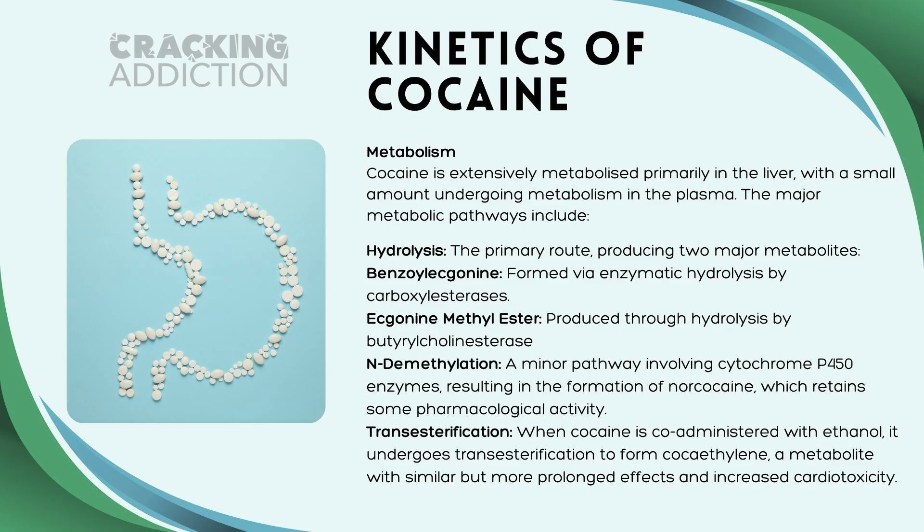Then we have N-demethylation. This is a minor pathway involving the use of cytochrome P450 enzymes, resulting in the formation of norcocaine, which retains some pharmacological activity. Finally, we have transesterification: when cocaine is co-administered with ethanol, it undergoes transesterification to form cocaethylene — a metabolite with similar but more prolonged effects and increased cardiotoxicity. A key harm reduction point: if you're going to use cocaine, you should not use it with alcohol, as you get the production of cocaethylene, which persists longer in the system and is more cardiotoxic.